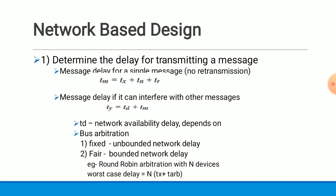In fair arbitration, the delay is bounded — we can bound the delay for transmitting a message for each and every node in the network. An example of fair arbitration is round robin arbitration. For round robin arbitration with N devices, the worst case network availability delay is given as N × TX + TARB, where TARB is the delay for arbitration, which is a very small value and can be omitted.